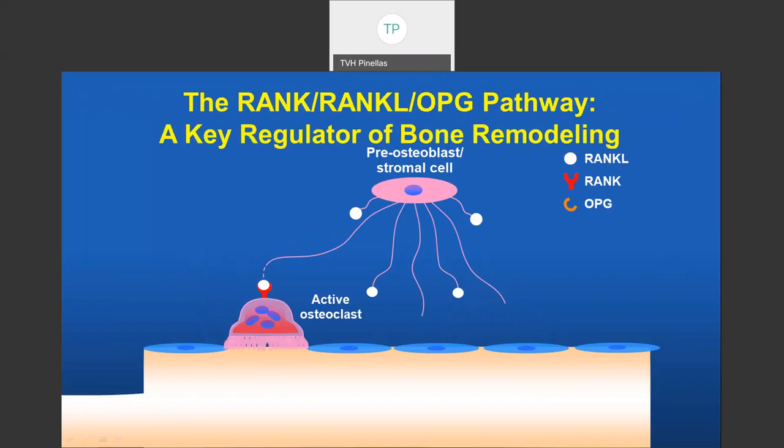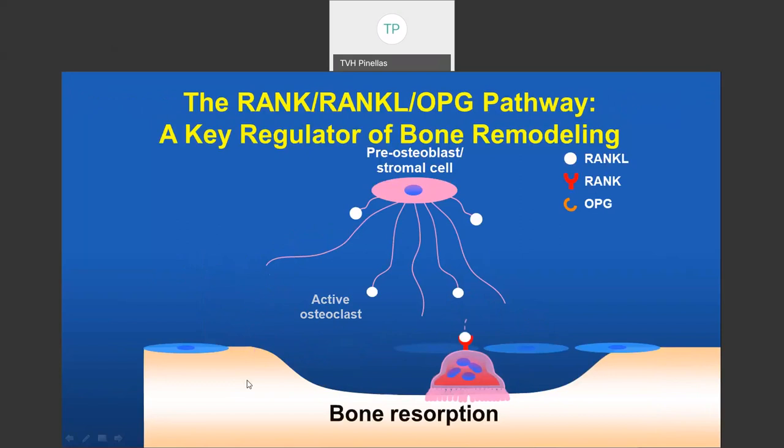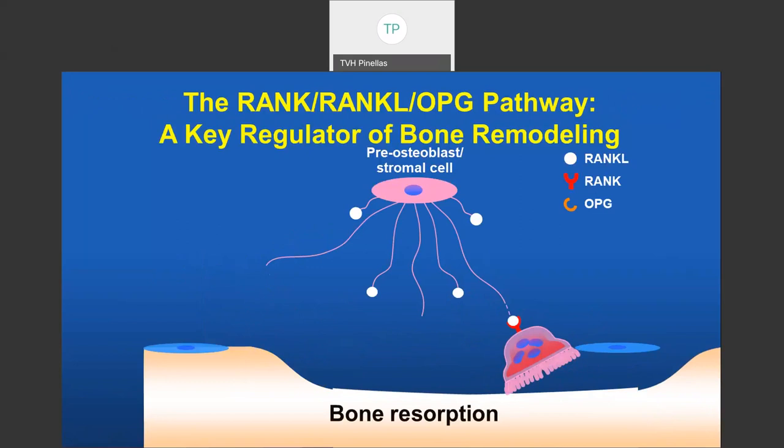This cartoon shows what happens in normal bone and then in bone loss. Bones are continually remodeling to keep them strong. This starts with bone resorption by cells called osteoclasts — the osteoclasts eating out a cavity in bone, which is the normal part of bone recycling. Once a cavity is created, bone-forming cells called osteoblasts follow and form new bone to fill in the cavity. The pink cell is the osteoblast, and the blue cells proliferate and fill in this space.